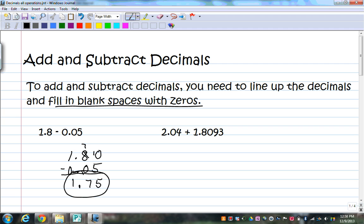For the next one, I have 2.04 plus 1.8093. Again, line up the decimals. 2.04 plus 1.8093. I'm adding these, and I'll put in the zeros to fill the spaces.